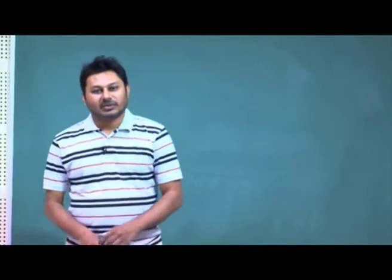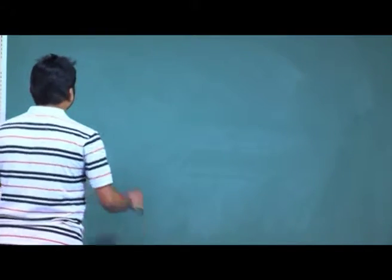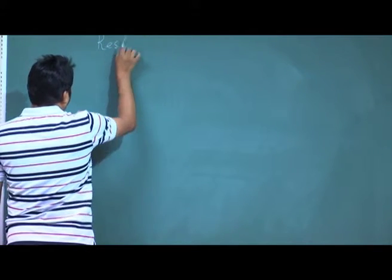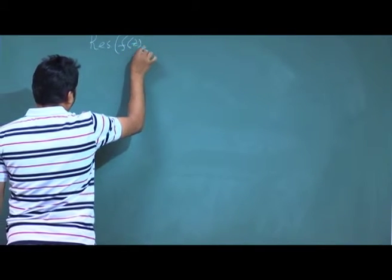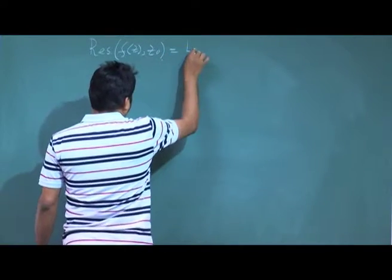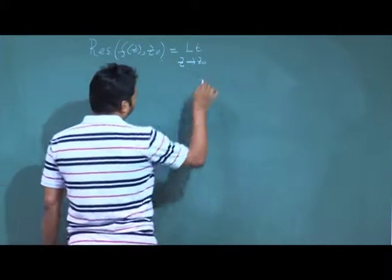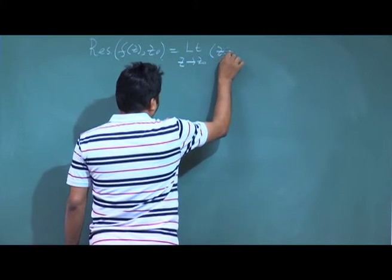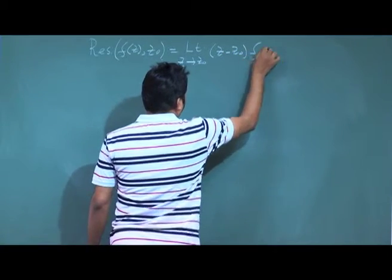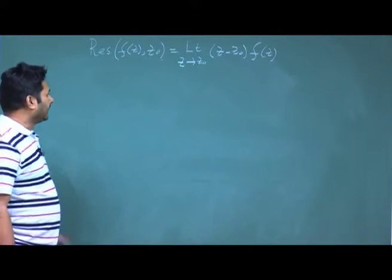Welcome back to the next class of complex analysis. In the previous class we started the very important concept called residue. If a function has a simple pole, then the residue of that function f(z) at z₀ can be represented as the limit as z tends to z₀ of (z - z₀)·f(z). That was the recipe we know.